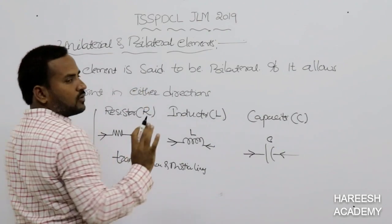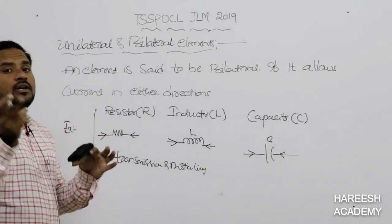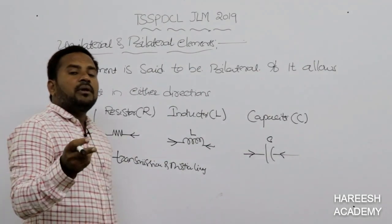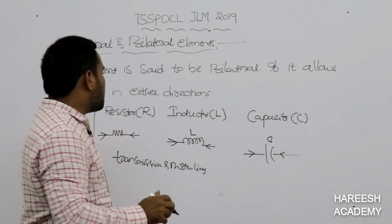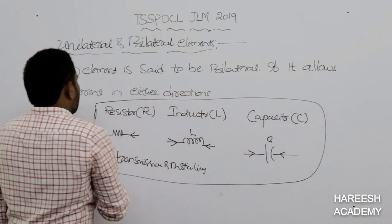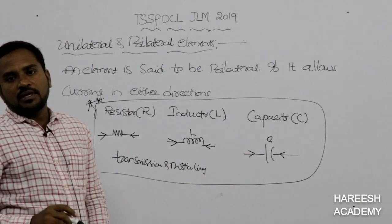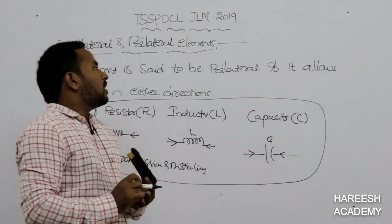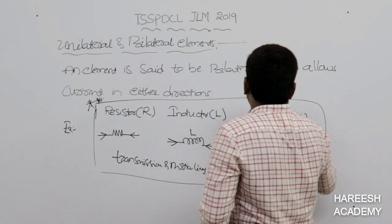The definition is important. The element can be unilateral — allowing current in one direction — or bilateral, allowing current in both directions. These are important examples: transmission and distribution lines, and RLC elements.